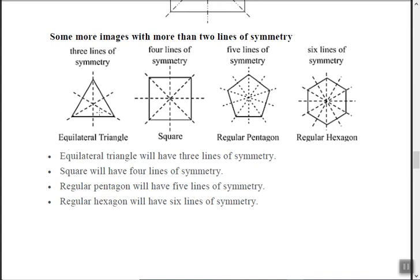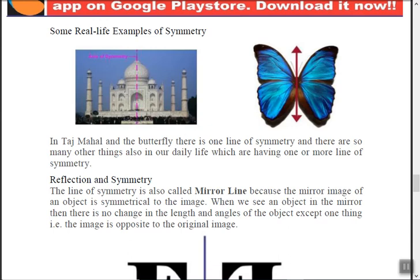An equilateral triangle, where all sides are equal, has three lines of symmetry. A square has four lines of symmetry. A regular pentagon — where all sides of the pentagon are equal — has five lines of symmetry. A regular hexagon has six lines of symmetry. Generally, a regular polygon has as many lines of symmetry as it has number of sides.